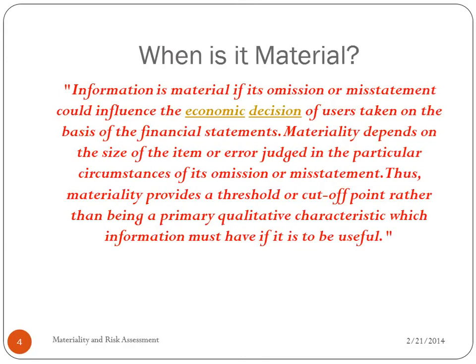When is something material? Information is material if its omission or misstatement could influence the economic decisions of users taken on the basis of the financial statements. So it has to be significant — a $3,000 misstatement for Walmart is not significant. Materiality depends on the size of the item or error judged in the particular circumstances of its omission or misstatement. Thus, materiality provides a threshold or cutoff point rather than being a primary qualitative characteristic — it has to affect the economic decisions of users.